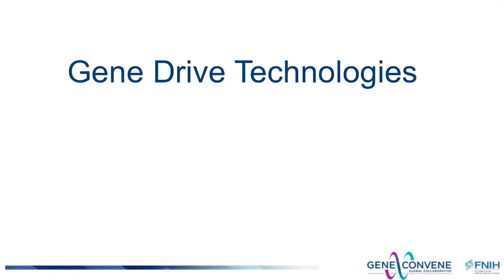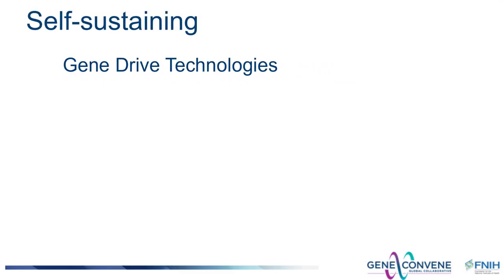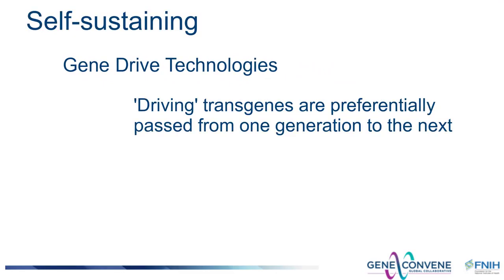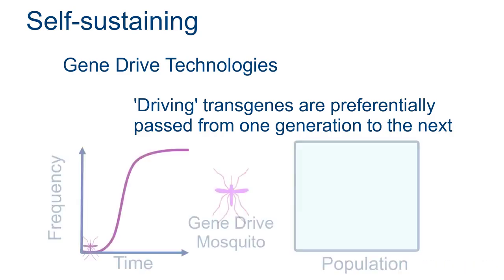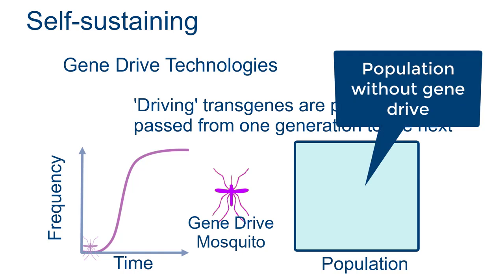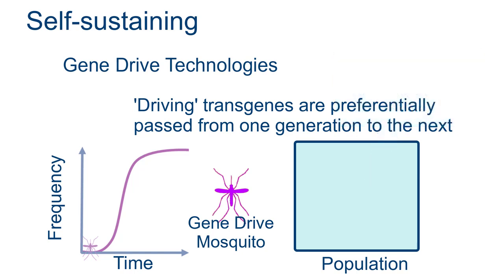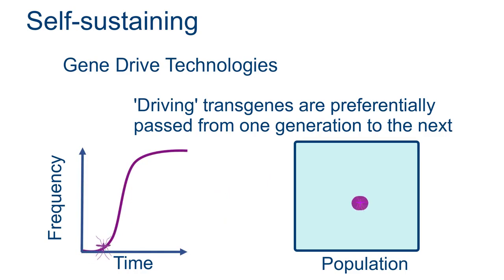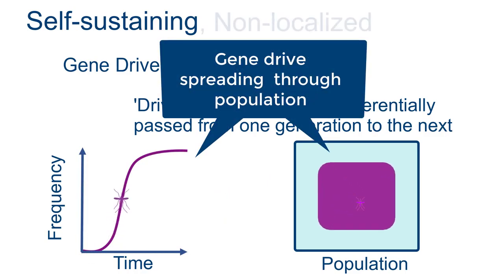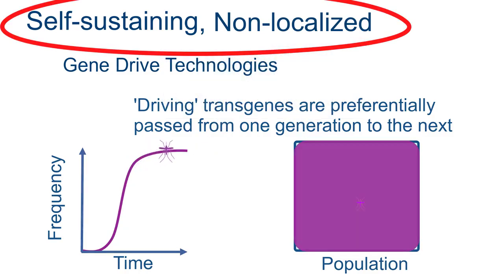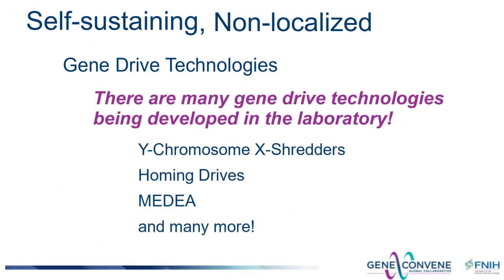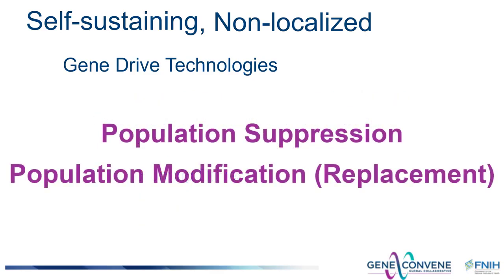Gene drive technologies are intended to be self-sustaining in that the transgenes involved are passed vertically from one generation to the next, in theory, indefinitely. Because transgenes that drive are preferentially transmitted to the next generation, they will increase in frequency in populations and spread through them, so they are non-localizing. Gene drive technologies such as Y-chromosome X-shredders, homing drives, and MEDEA can be used for population suppression and population replacement.